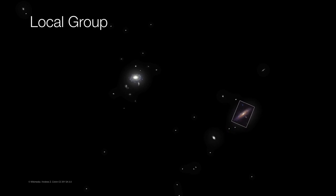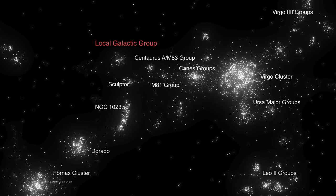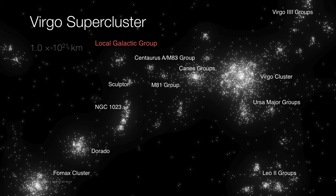The Local Group is just one tiny little clump of galaxies belonging to a much larger complex called the Virgo supercluster. And the Virgo supercluster spans a diameter of about 10 to the 21st kilometers — a few more orders of magnitude greater.